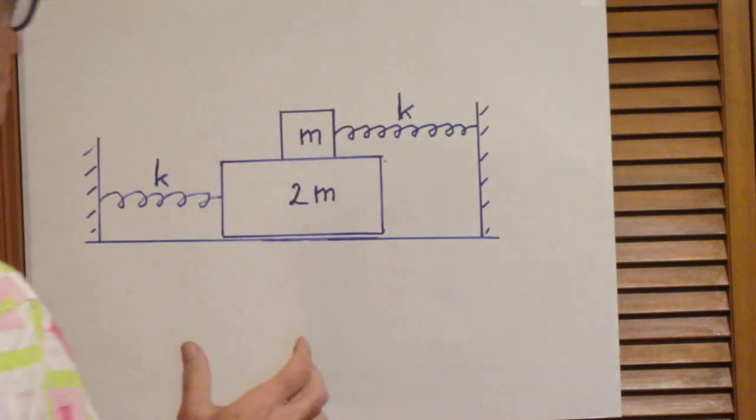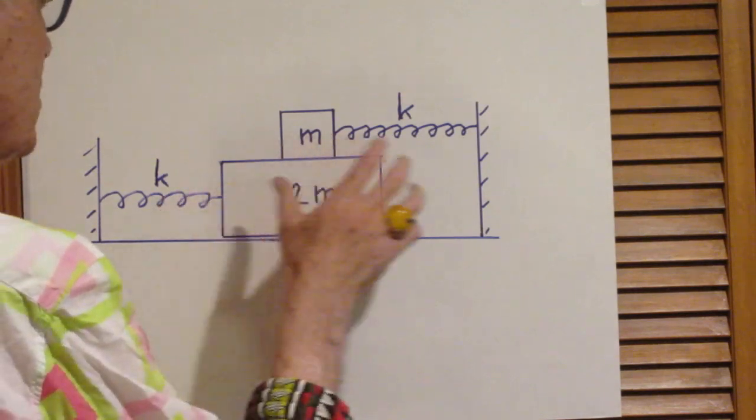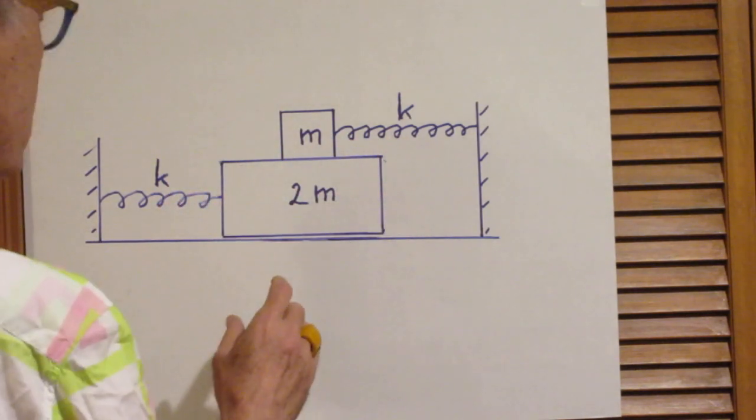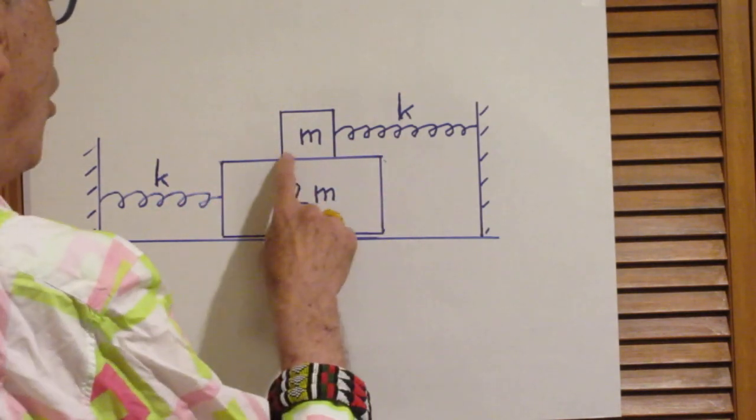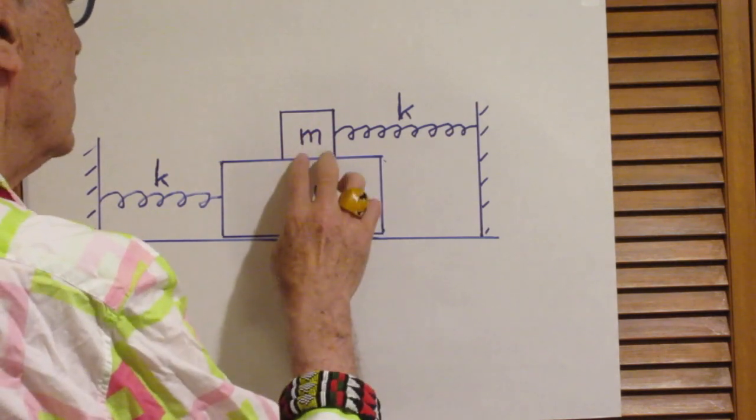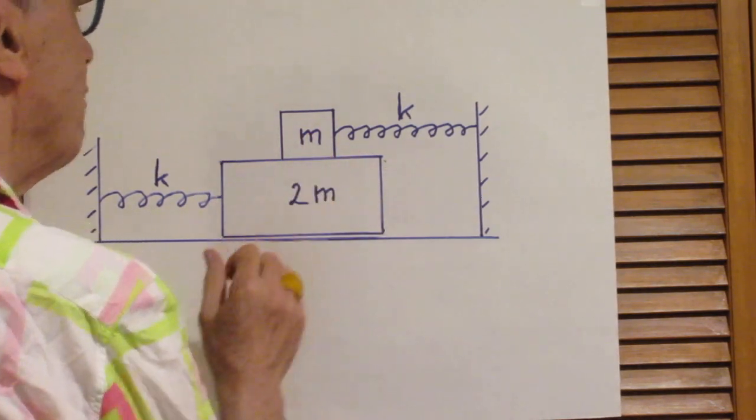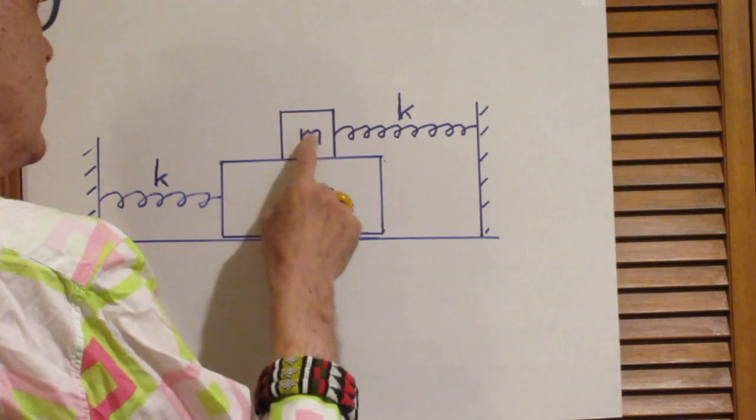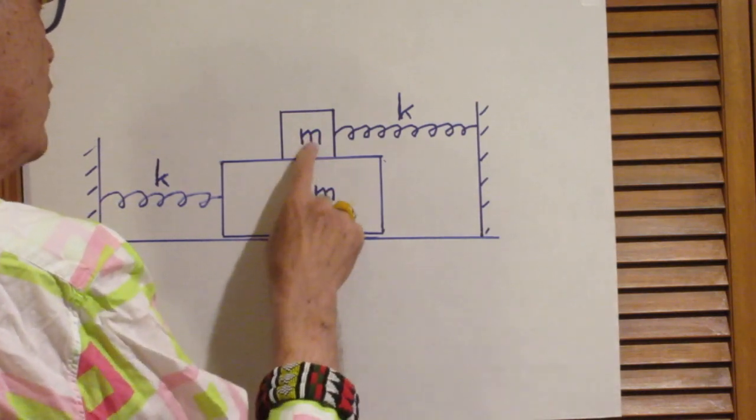Alright, so in summary, the system can oscillate back and forth as long as this object doesn't slip on top. But in principle it can slip because the friction coefficient is mu.